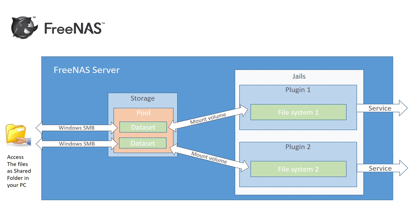There's another concept in FreeNAS called jails. Each plugin acts like an individual operating system inside the FreeNAS server — they share the kernel with the FreeNAS server but each has its own file system. So the first thing you need to do is connect your FreeNAS server's storage, which is a dataset, to the file system of a plugin using mount volumes. You mount a specific dataset to the file system of Plugin 1 and another dataset to the file system of Plugin 2.